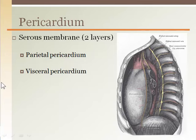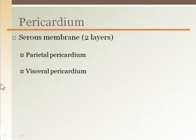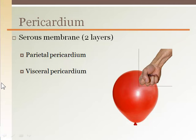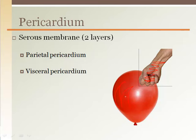The pericardium is a membrane that surrounds the heart, containing it in its own space called the pericardial cavity. The membrane is a double membrane folded back on itself, like a fist pushing into an inflated balloon. The part of the pericardium touching the heart is the visceral pericardium, while the outer layer you can see is the parietal pericardium. In reality it only looks like one layer, as the visceral pericardium is fused with the surface of the heart and very difficult to distinguish.